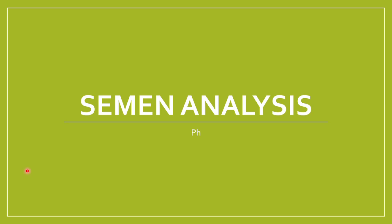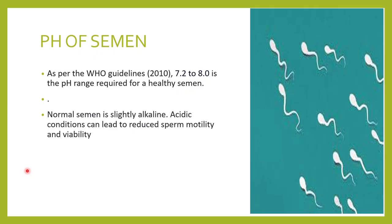Welcome to Classes by Lab Doctor. In today's class, let us discuss about seminal pH. The pH of semen, as per WHO guidelines, should be between 7.2 to 8 for healthy semen. Semen has a slightly alkaline pH.